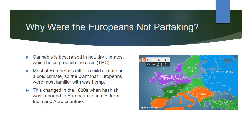Why were the Europeans not partaking? Cannabis is best raised in hot, dry climates, which helps produce the resin or THC. Most of Europe has either a mild or cold climate, so the plant Europeans were most familiar with was hemp. Except in India and China, most of the ancient Western world was completely ignorant of the intoxicating properties of the plant; ancient European legends had little to say about its psychological effects. If Europeans saw any magic in cannabis it was its fibers, not its intoxicating power, that they admired. This changed in the 1800s when hashish was imported to European countries from India and Arab countries.